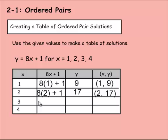Let's find out when x is 3 then. It would be 8 times 3 plus 1. 8 times 3 is 24, plus 1 is 25. So our ordered pair would then be 3 and 25.